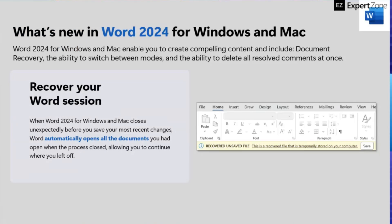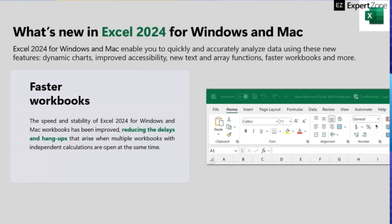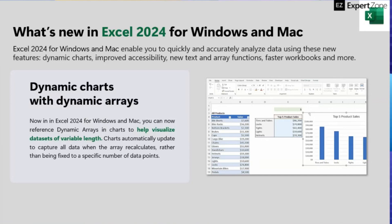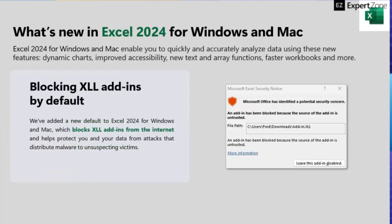With Word, it automatically opens all documents that you haven't saved. With the 'Recover Your Word Session' feature, when you open Word, it automatically suggests recovery files. This is available for both Windows and Mac. For Excel, also available for both Windows and Mac, we now have faster workbooks, reducing delays and hang-ups. There are also additional new charts, dynamic charts, and dynamic arrays. Text and array functions are included in Office 2024 where you can combine, reshape, resize, and select arrays. There is also blocking of XLL add-ins — any additional plugins included in downloaded files are automatically blocked.